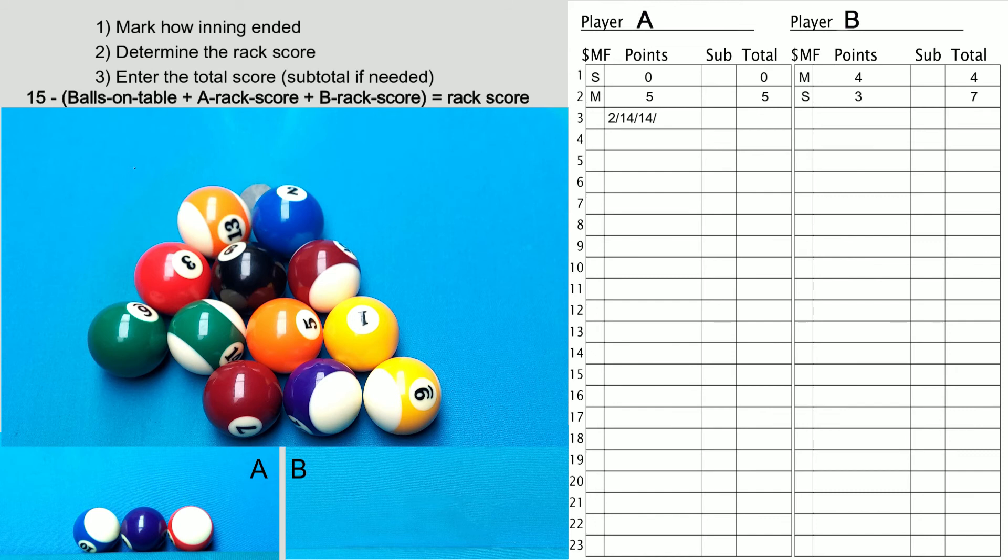So the intentional foul means that player's inning is over. So we go to the three-step process. Step one: mark an F for the foul. Step two: determine the rack score. 12 balls on the table minus no rack scores yet equals three. Step three: this is the first time we're going to use the subtotal column to add up player A's nice run of 33 balls, giving them a total score of 38. But wait a minute, player A ended their inning on an intentional foul. That's a minus one to his score. You don't take it from the rack score or the subtotal. You subtract it from the total. Their total is now 37.